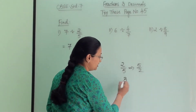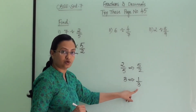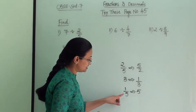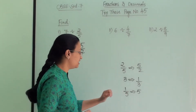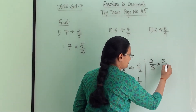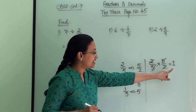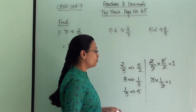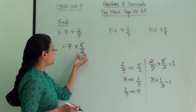For example, the reciprocal of 3 is 1/3, and the reciprocal of 5 is 1/5. The important thing about reciprocal is that when you multiply a number with its reciprocal, you always get 1 — because the numbers above and below cancel out. For example, 3 multiplied by 1/3 gives 1.